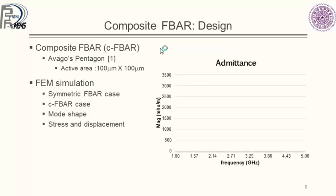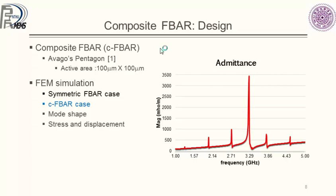For the symmetric F-bar, the 2D admittance-versus-frequency simulation shows a fundamental mode at around 3.3 gigahertz. For the composite F-bar, there are multiple even and odd harmonics, with a higher-order mode corresponding to 3.3 gigahertz; the fundamental mode is at around 600 megahertz. These harmonics arise from the acoustic mismatch due to the addition of the single crystal silicon.